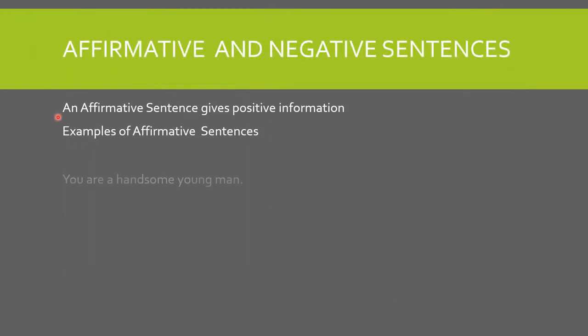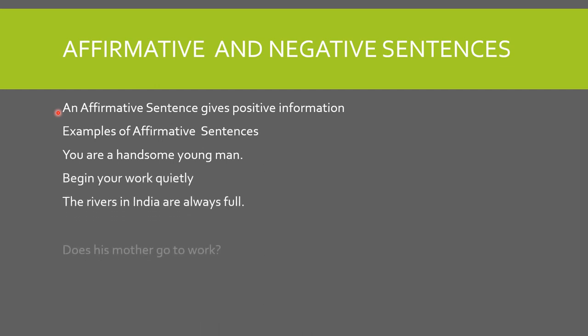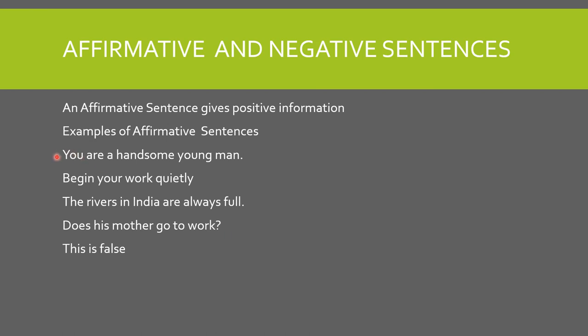Affirmative and negative sentences. An affirmative sentence gives positive information. Examples: 'You are a handsome young man.' 'Begin your work quietly.' 'The rivers in India are always full.' 'Does his mother go to work?' — this is an interrogative but affirmative sentence. Negative words like no, not, never, and none do not appear in affirmative sentences.